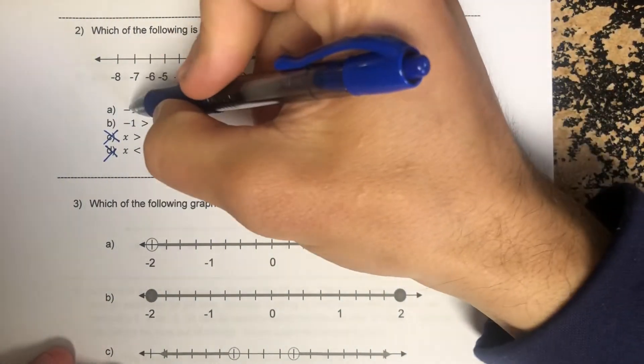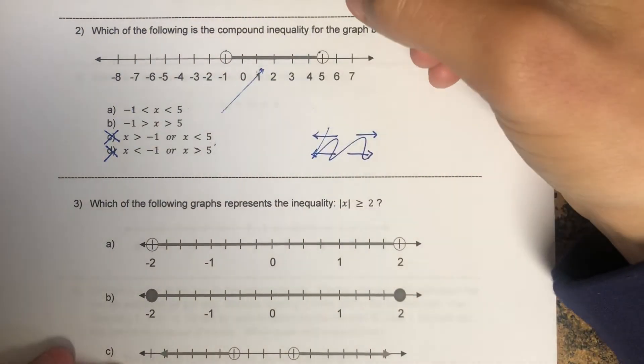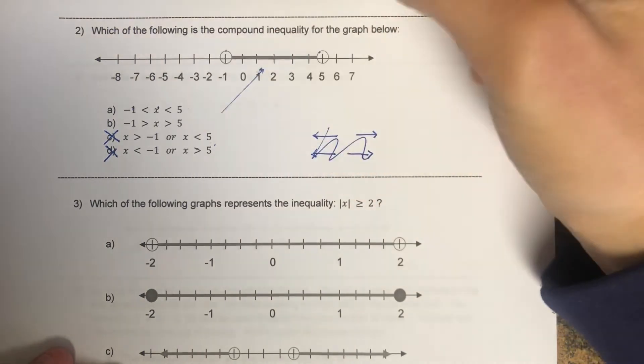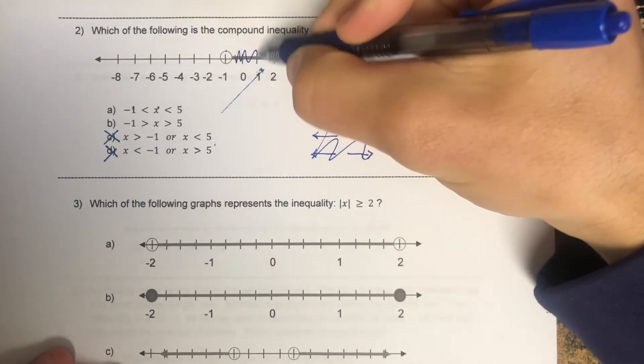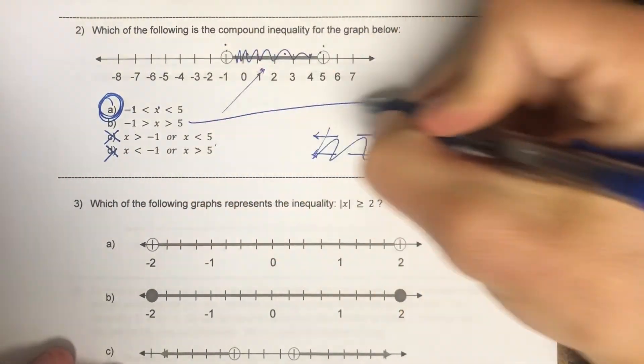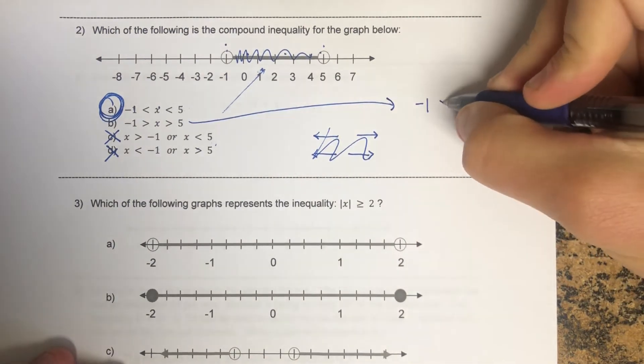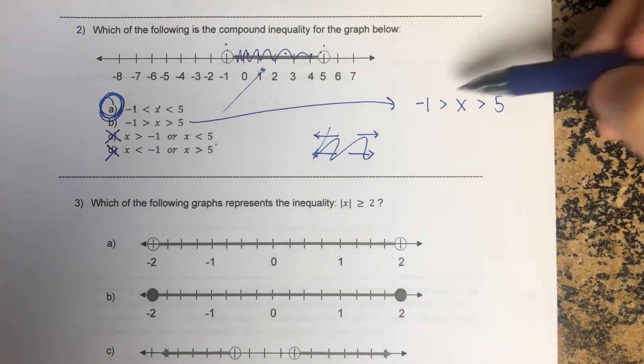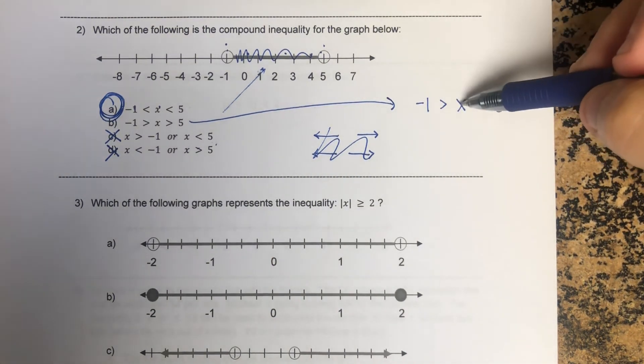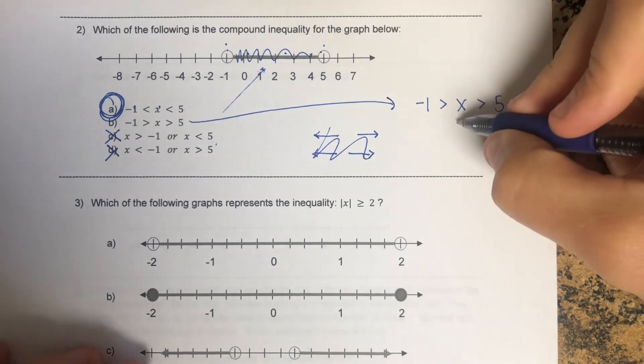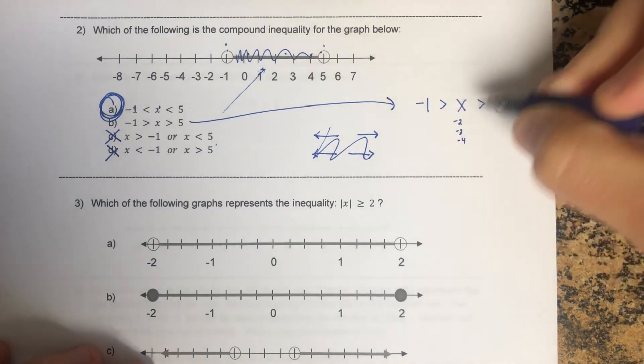So remember what I had always said with these type of questions, and this was like number one as well. X is between negative one and five. All my answers are between negative one and five, definitely letter A. Letter B, it's written really weird, okay? And technically when you read it, it says negative one is greater than x, so that means negative one is bigger than x, which means x is numbers like negative two, negative three, negative four.